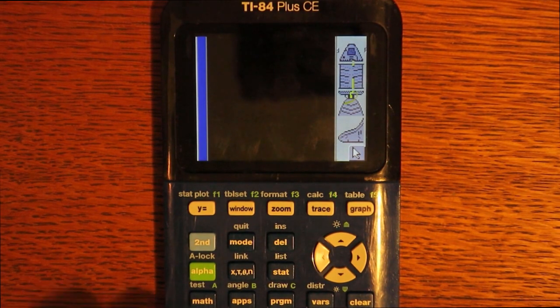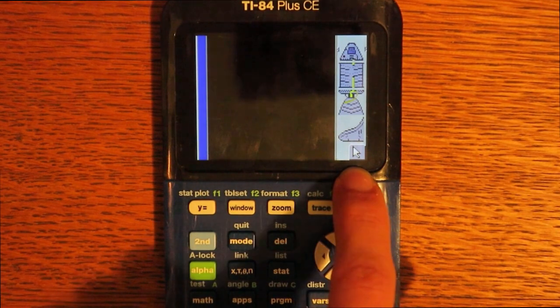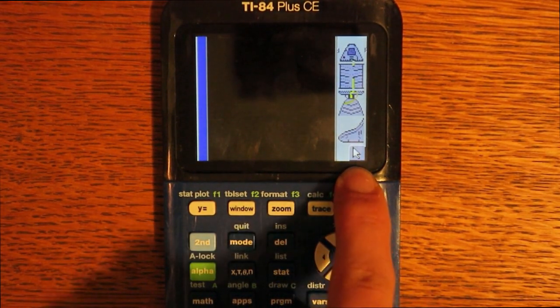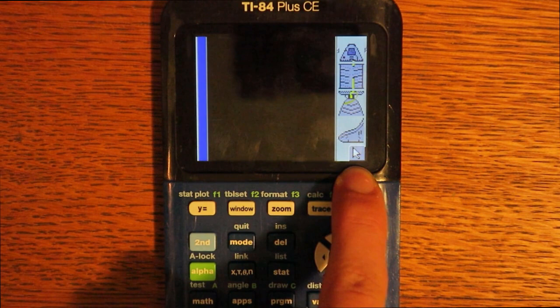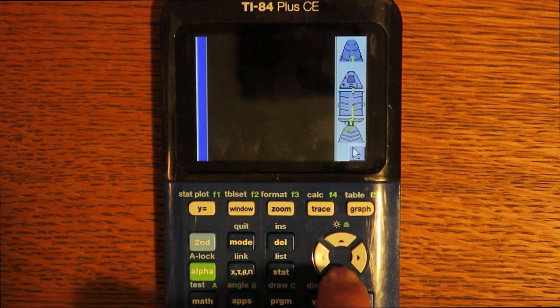Here we have the build menu. Currently we are in the part selection phase. You can tell because there is a mouse cursor in the little button down there. To select a part, you can press up or down arrows.